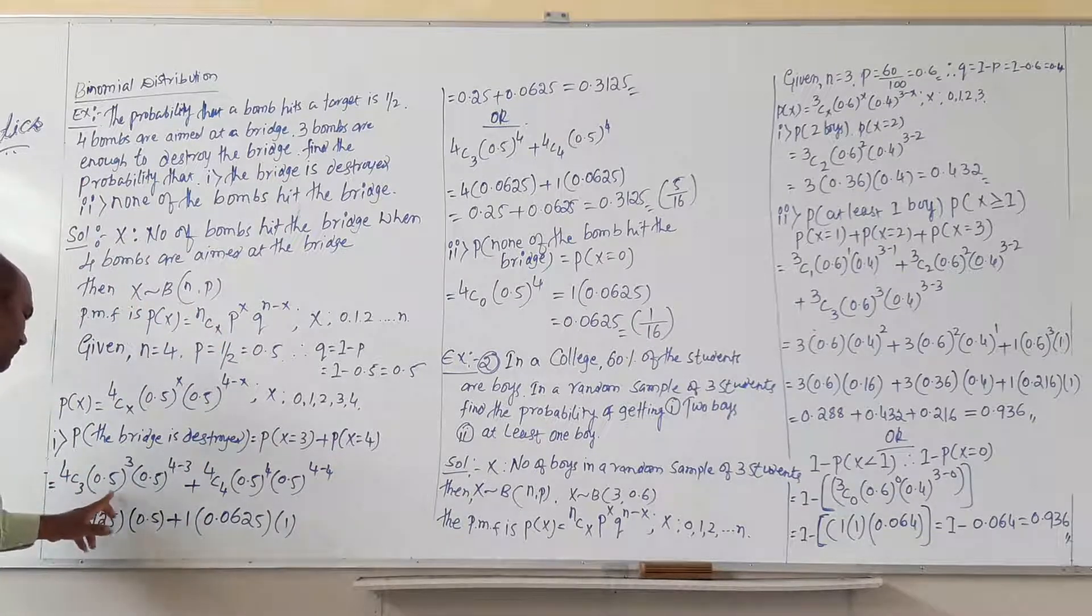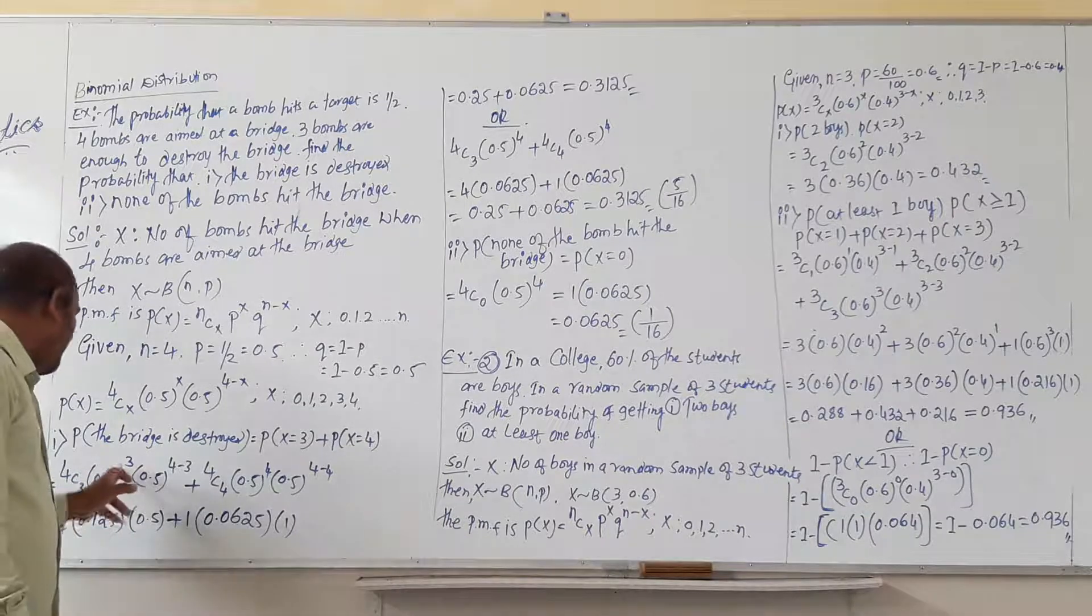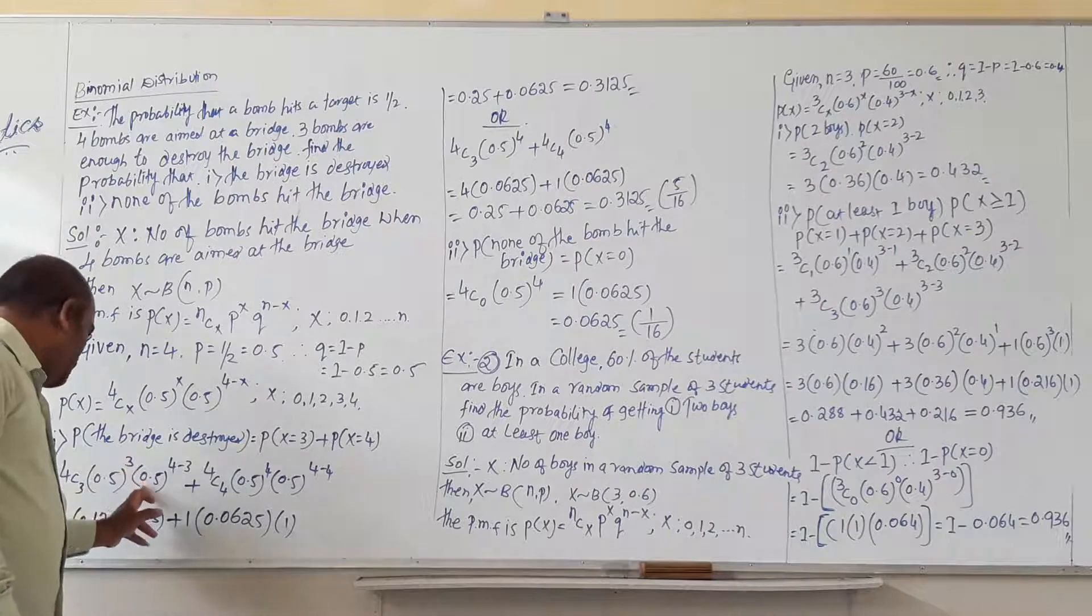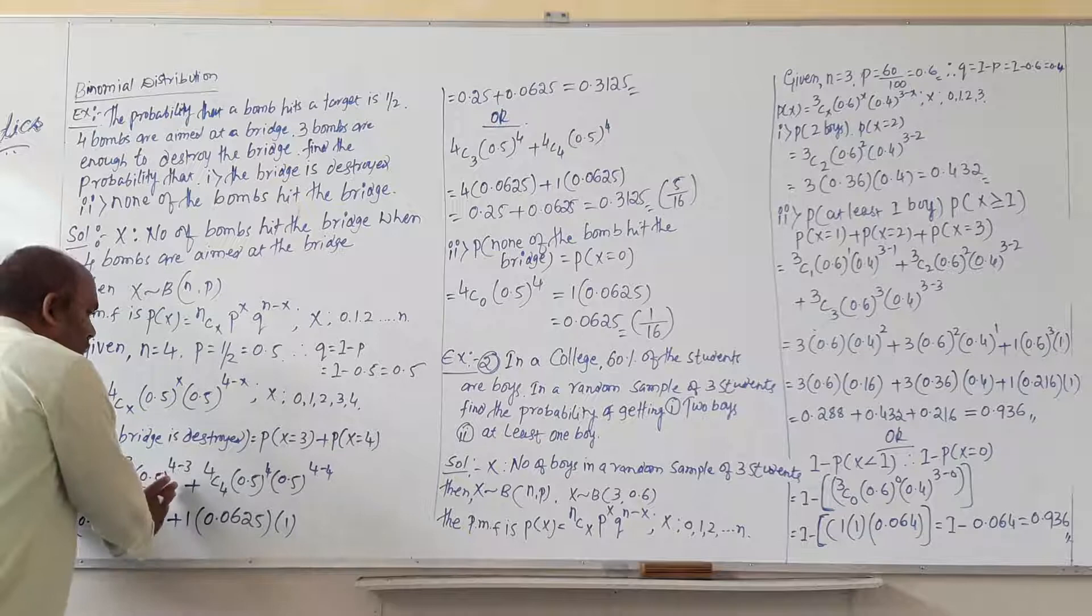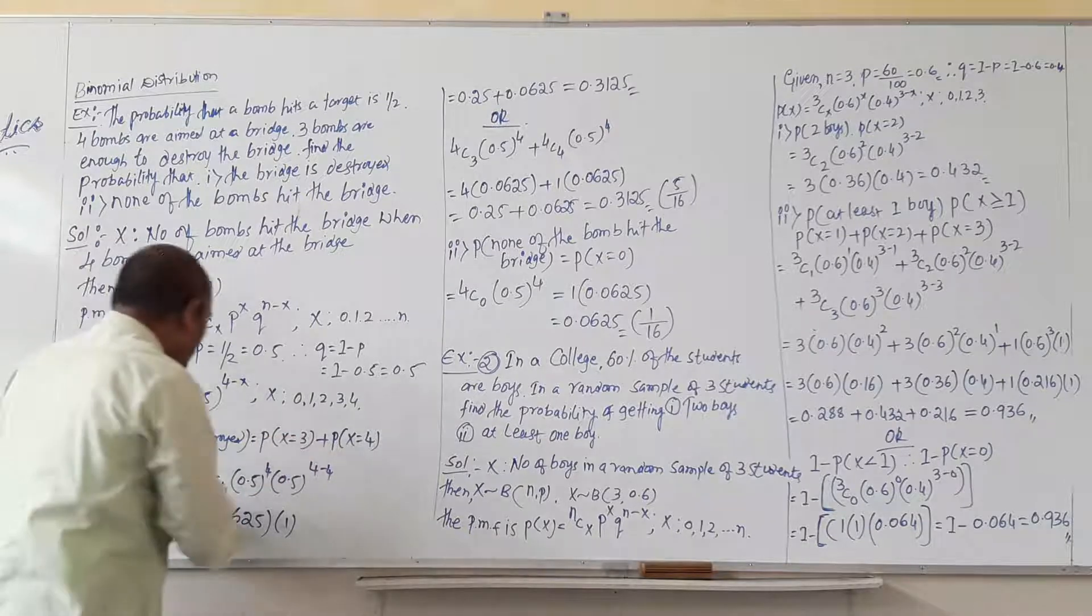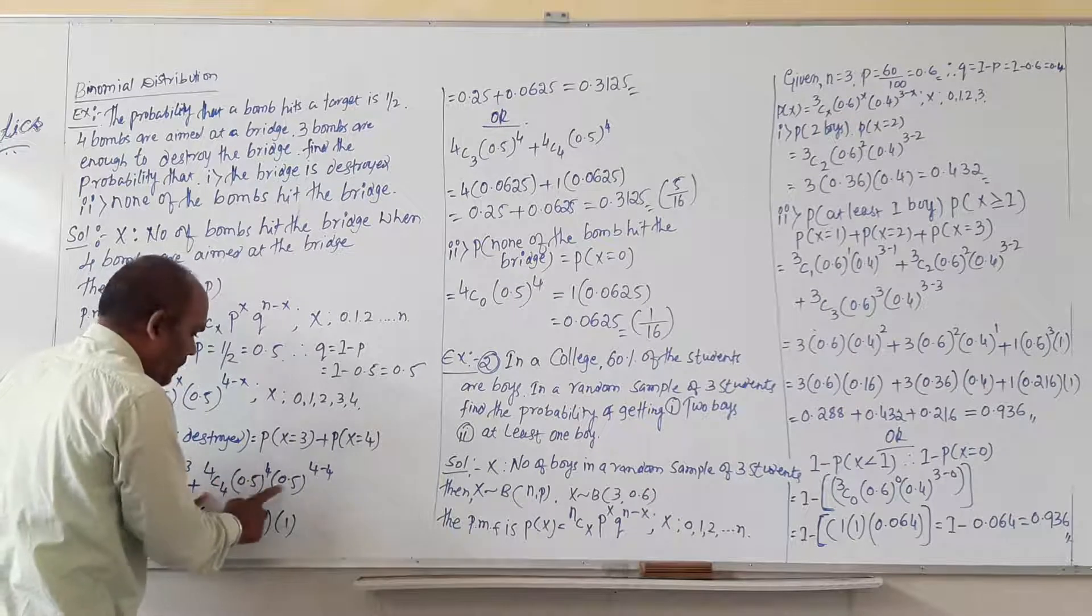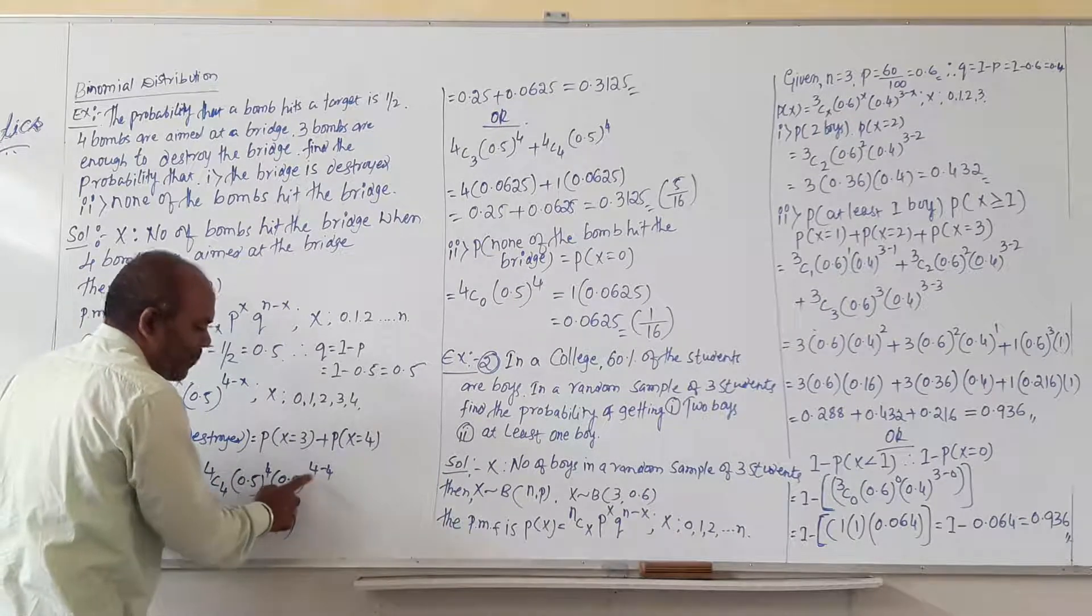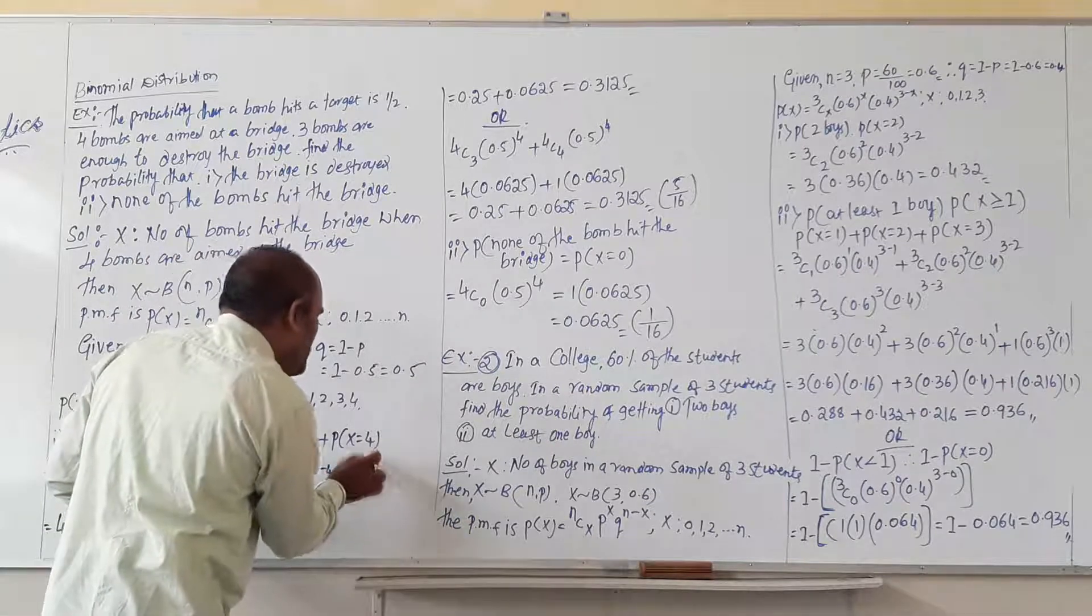So we are taking x value 3, so 0.5 raise to 3, so 0.5 raise to 3. This is relating to x equal to 3. Then 4C4, 0.5 raise to 4, and 0.5 raise to 4 minus 4. This is relating to x equal to 4.